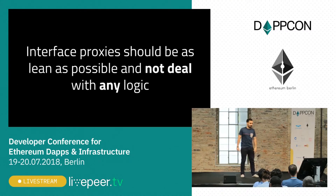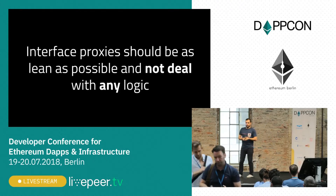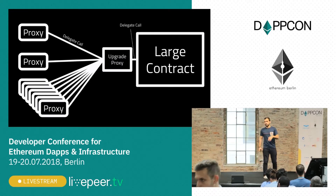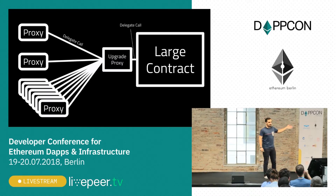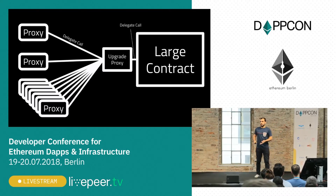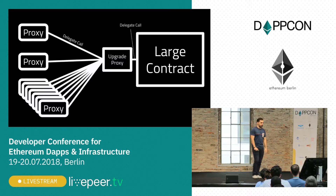This might be a personal opinion, but I believe that interface proxies should be as lean as possible. They shouldn't have to deal with any logic at all. So if you want to build upgradability, don't do it in the interface proxies. Make sure that the interfaces you're showing to your clients are the most auditable, most simple thing you can provide them.